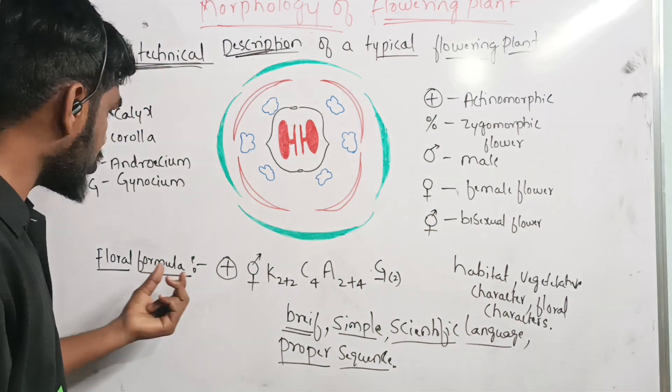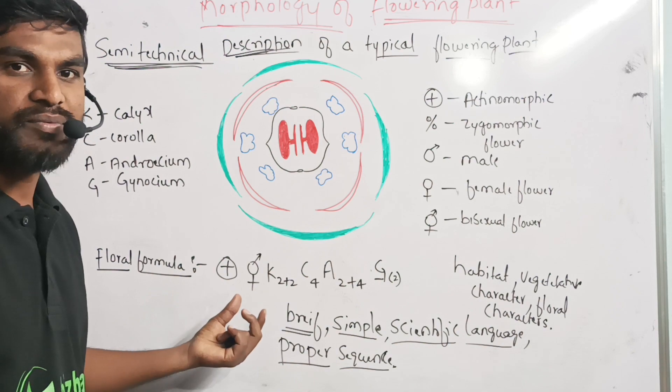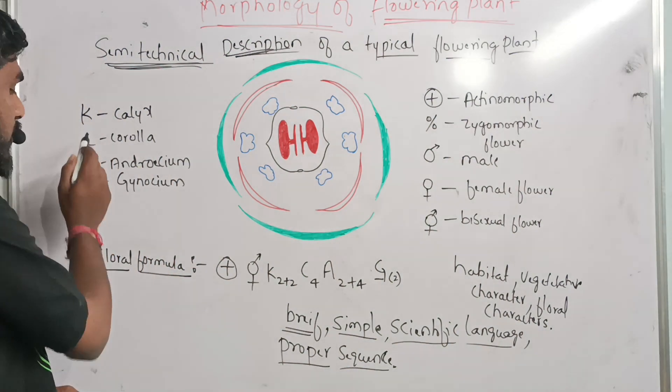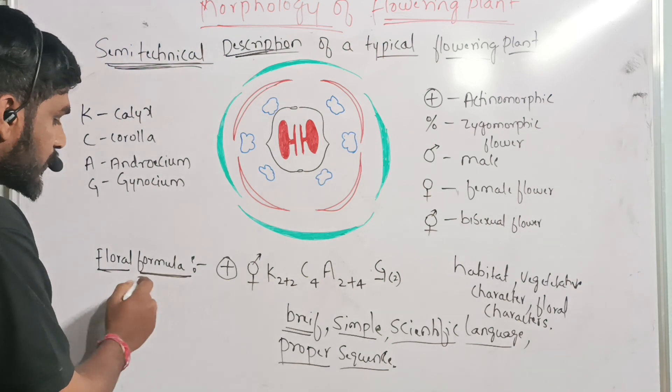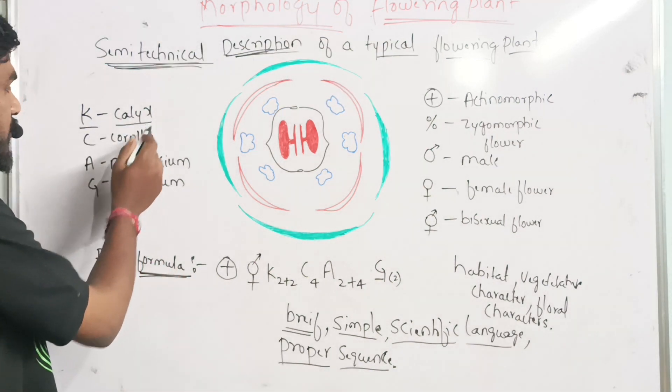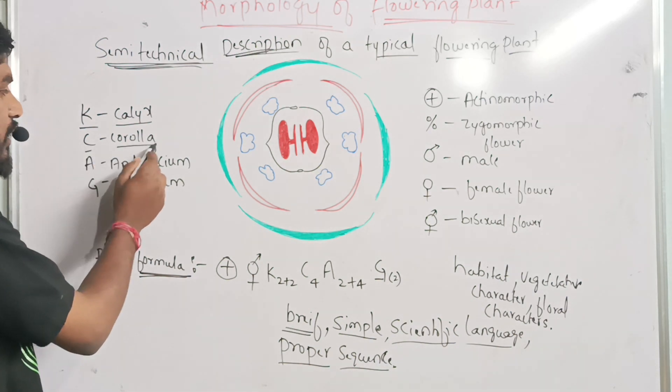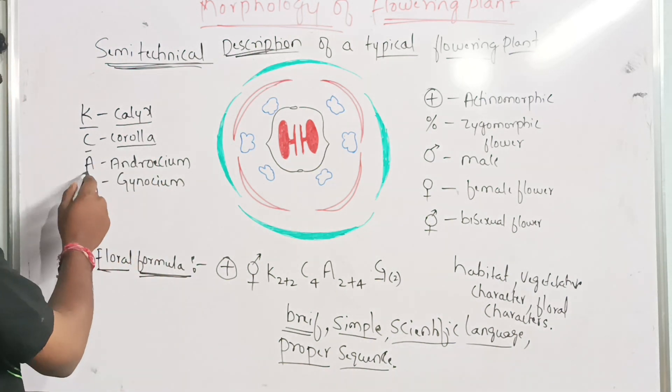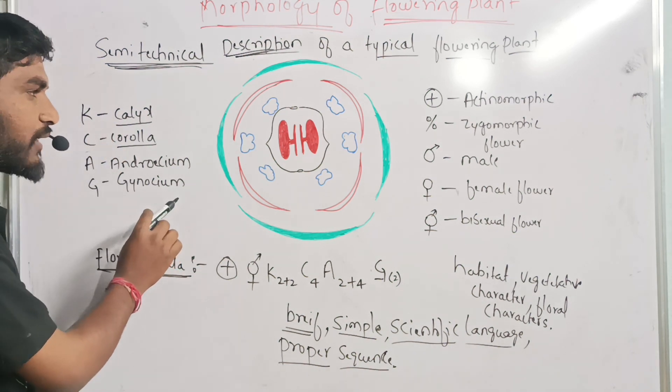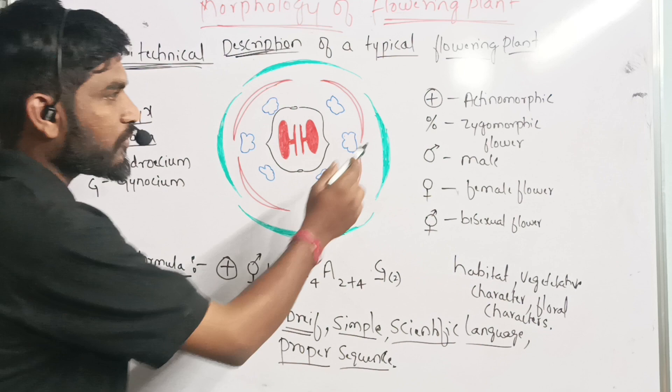Some scientific symbols are present for the description of the floral parts. Here, this is a floral formula for mustard plants. K stands for calyx, C stands for corolla, A stands for androecium, G stands for gynoecium.